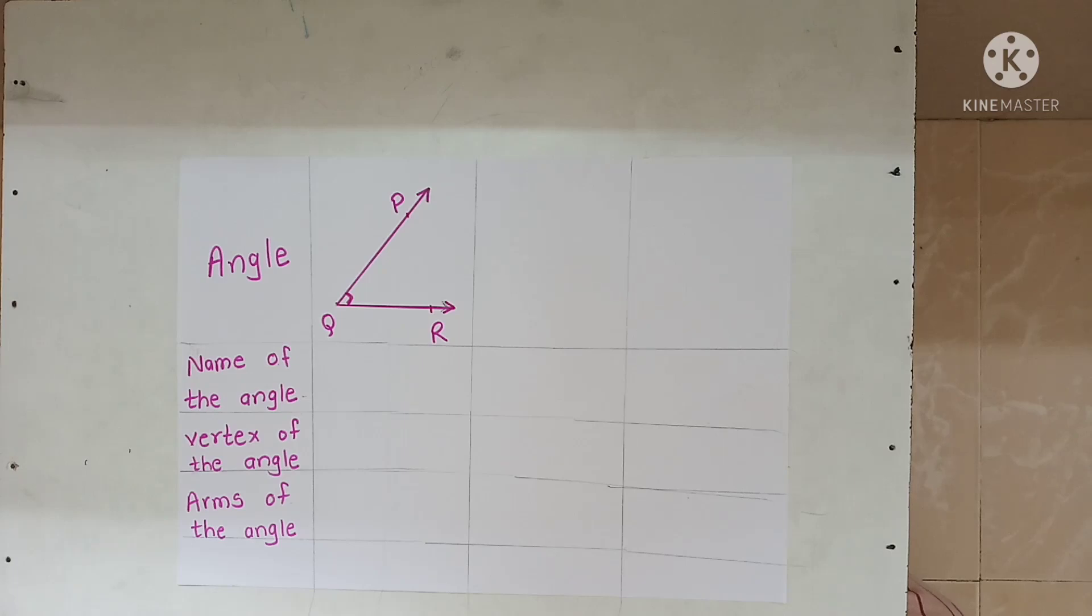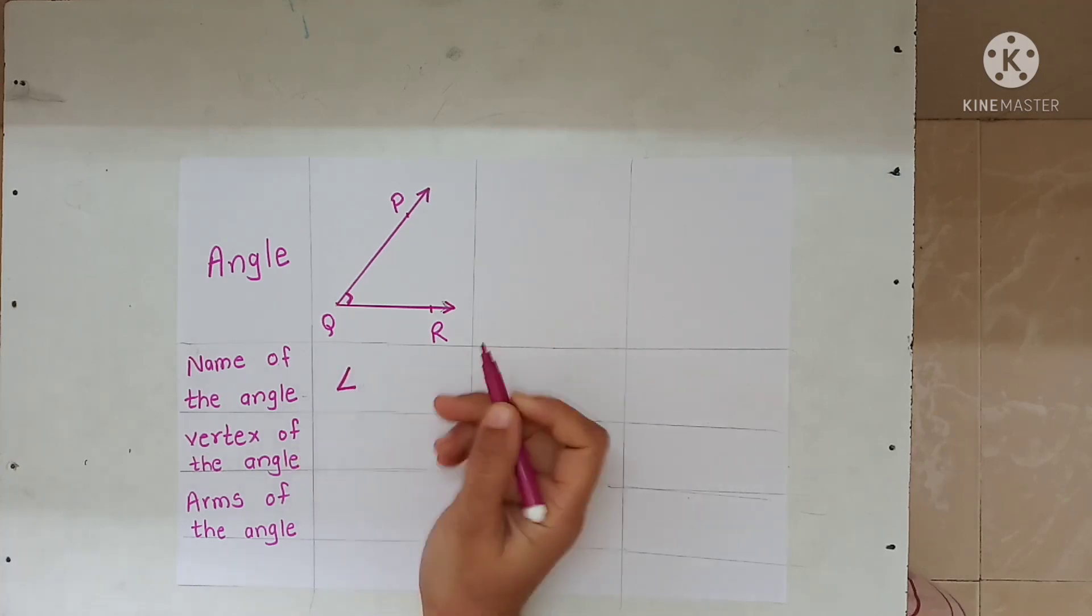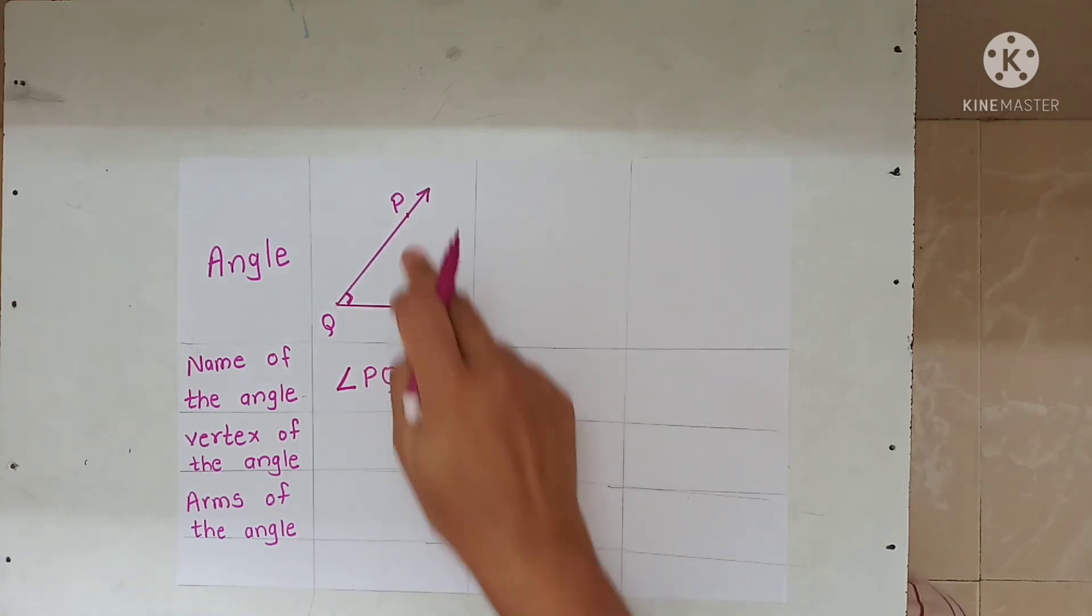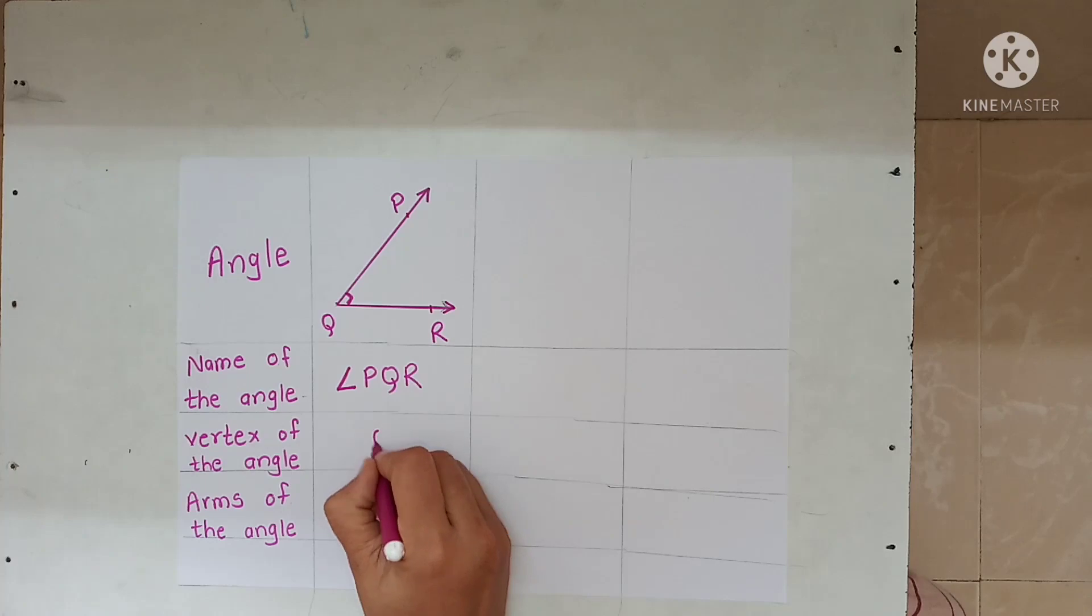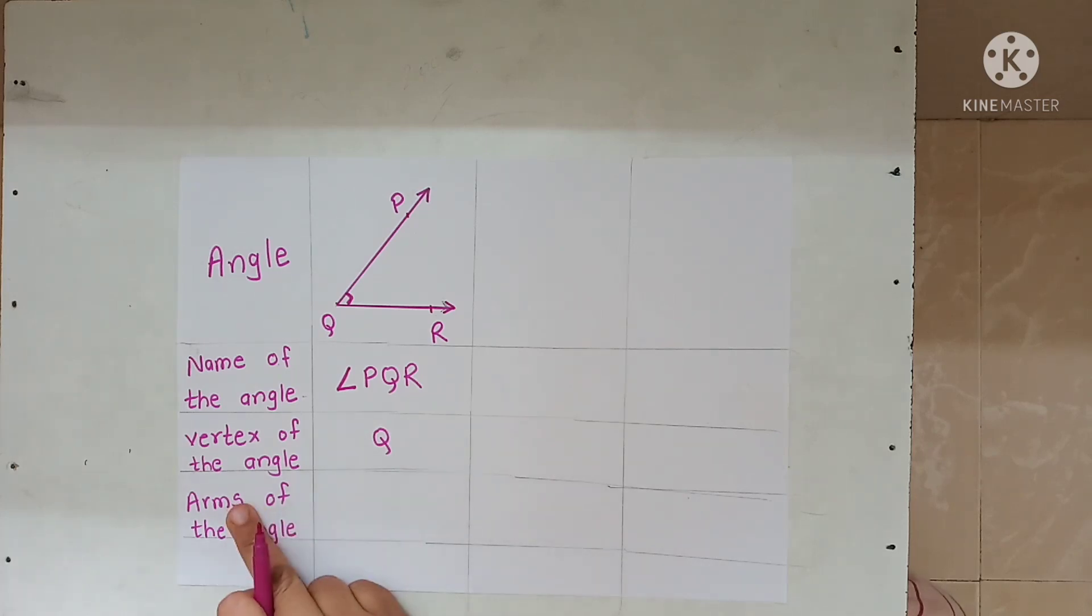The name of the angle is angle P, Q, R. So, the vertex of the angle is Q. Q is the vertex of the angle. And the arms of the angle - we have two sides of the angle.